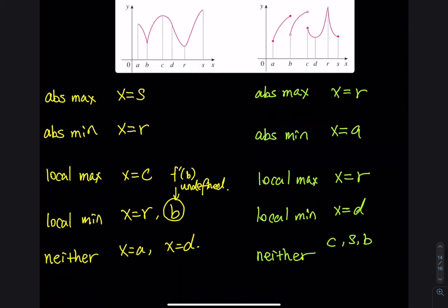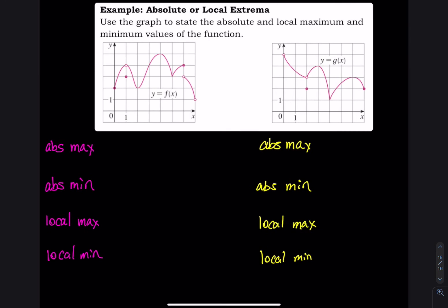Now we have two more pictures. Look at the picture — same thing — I want you to tell me the absolute max and min and the local max and min. To make reading easier, let's put numbers on the graph: x equals 1, 2, 3, 4, 5, and 6. The y-axis goes 1, 2, 3, 4. The absolute maximum is the highest y value, which occurs when x equals 4, y equals 4.